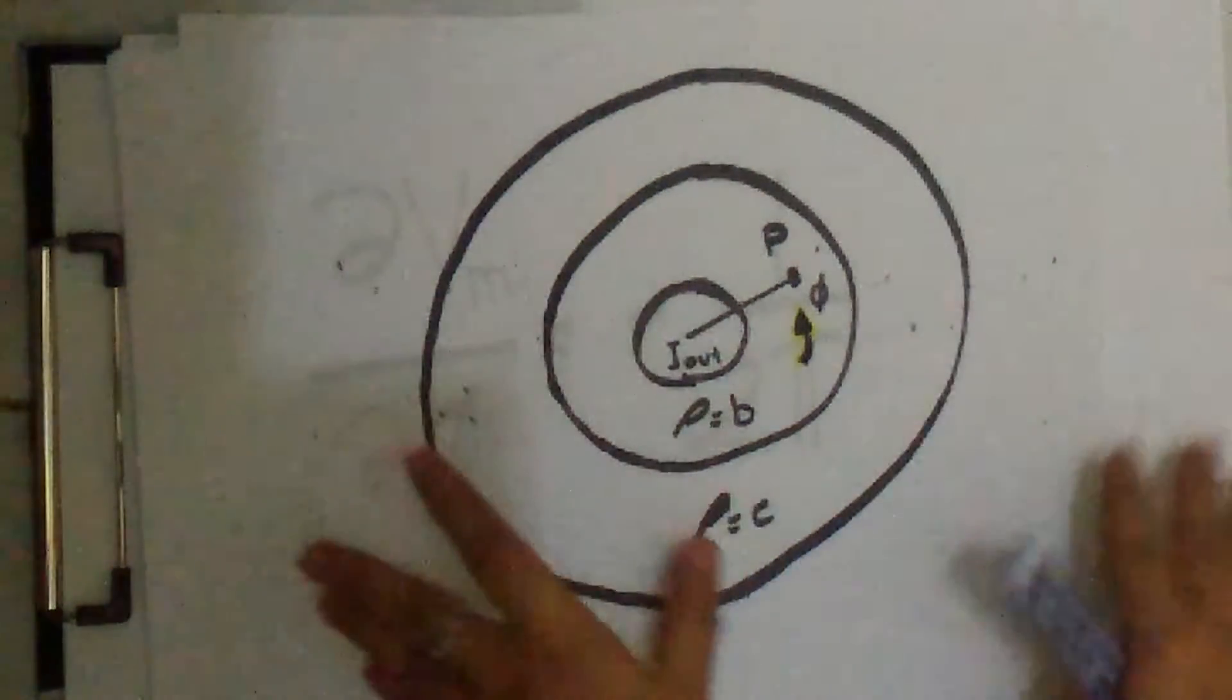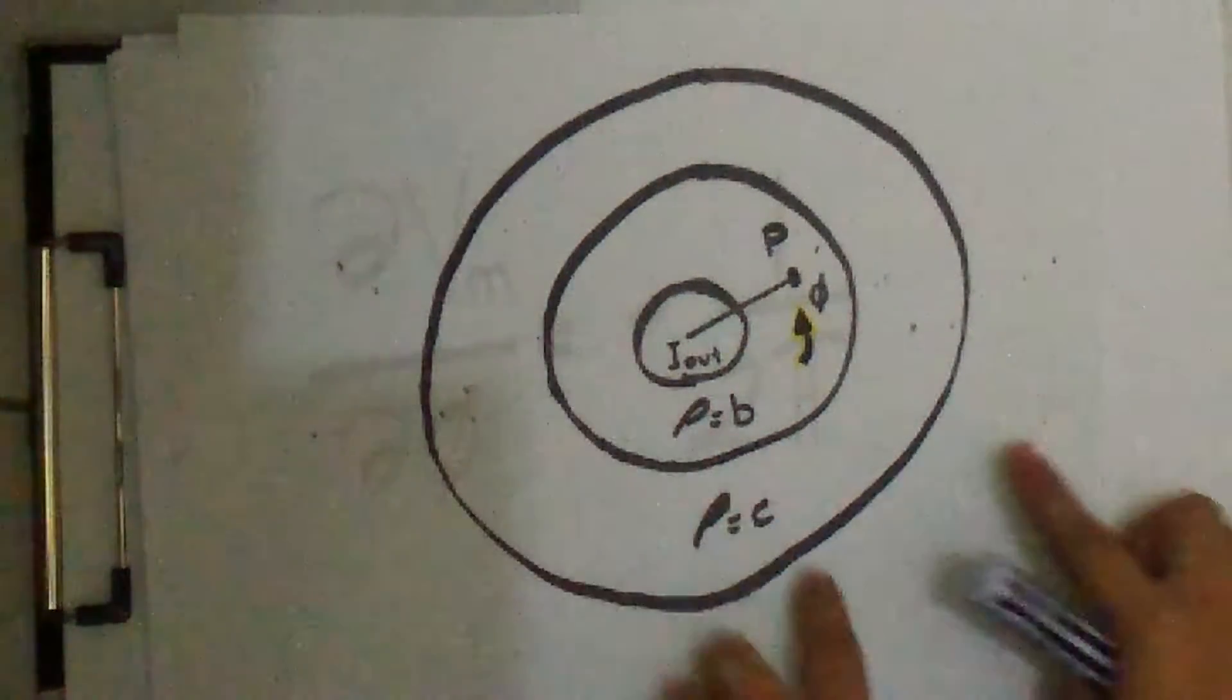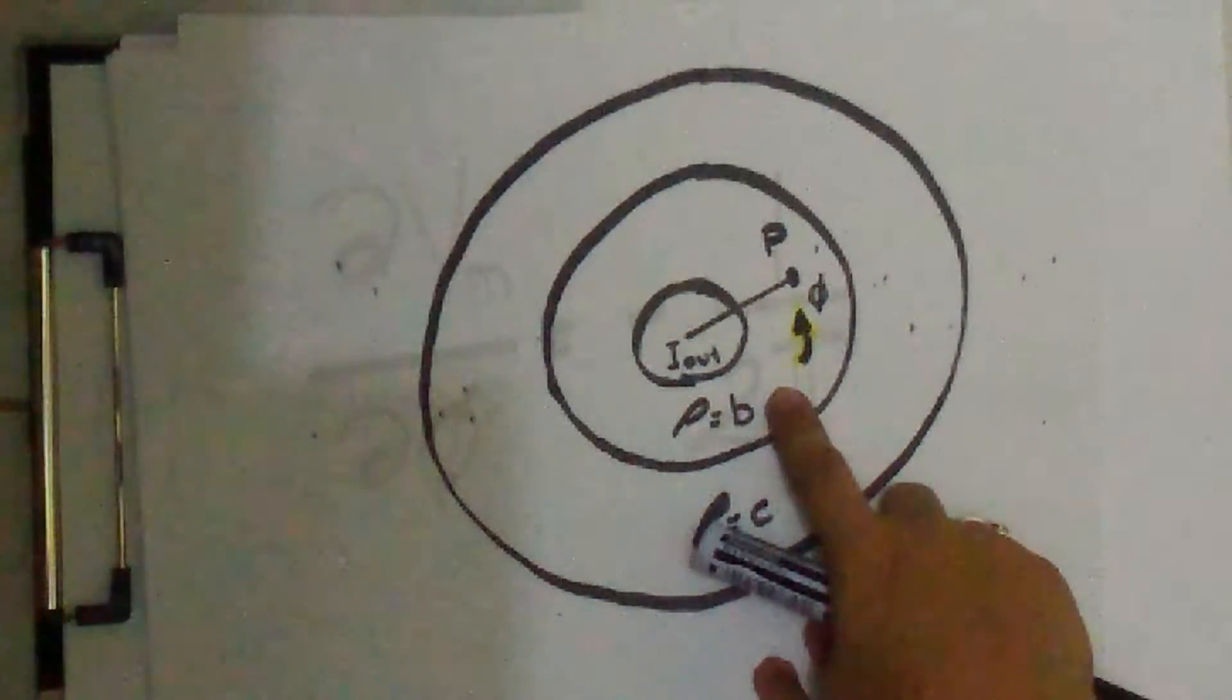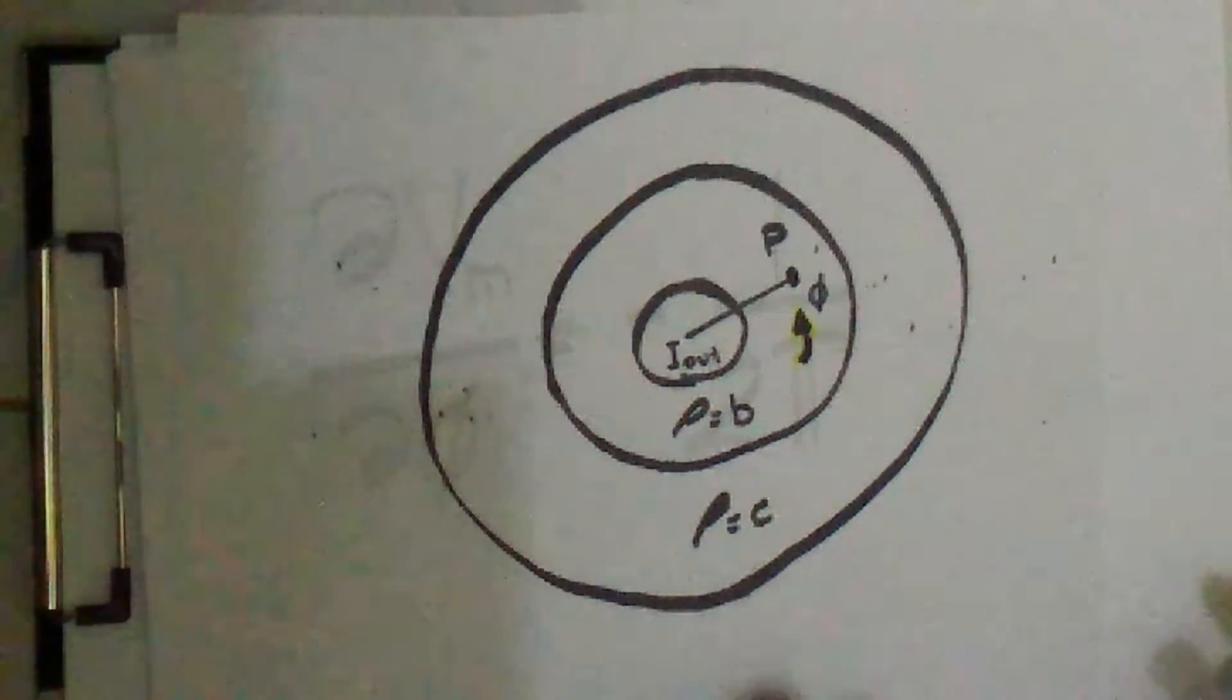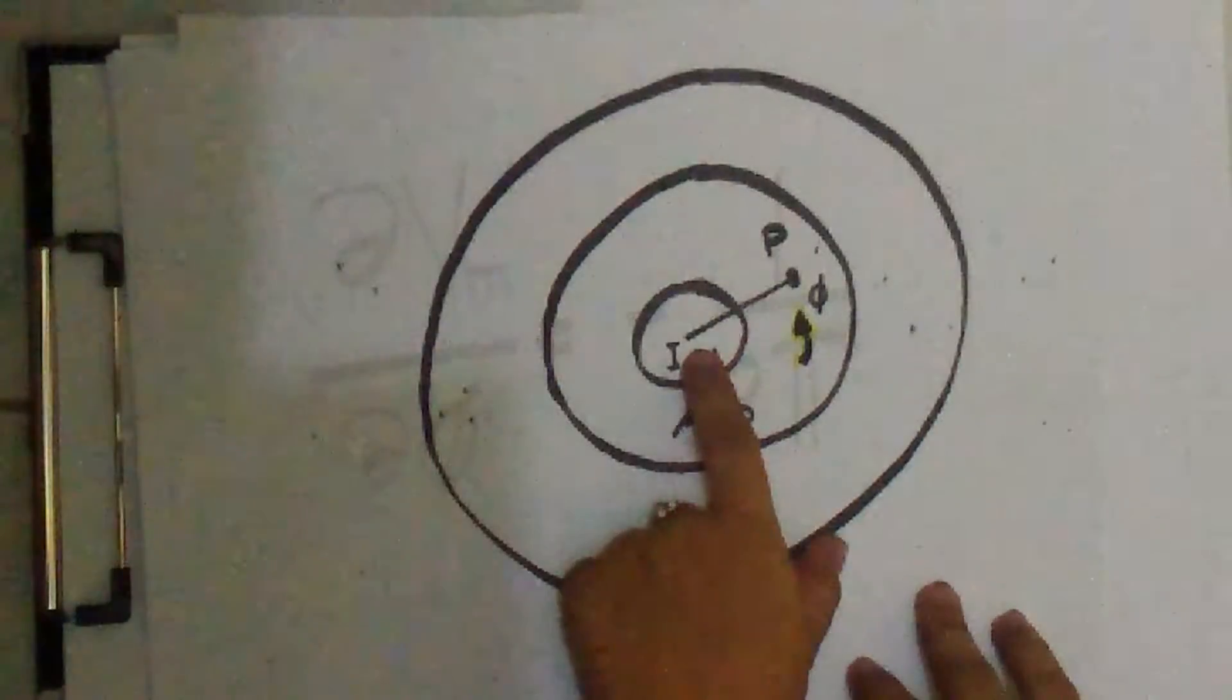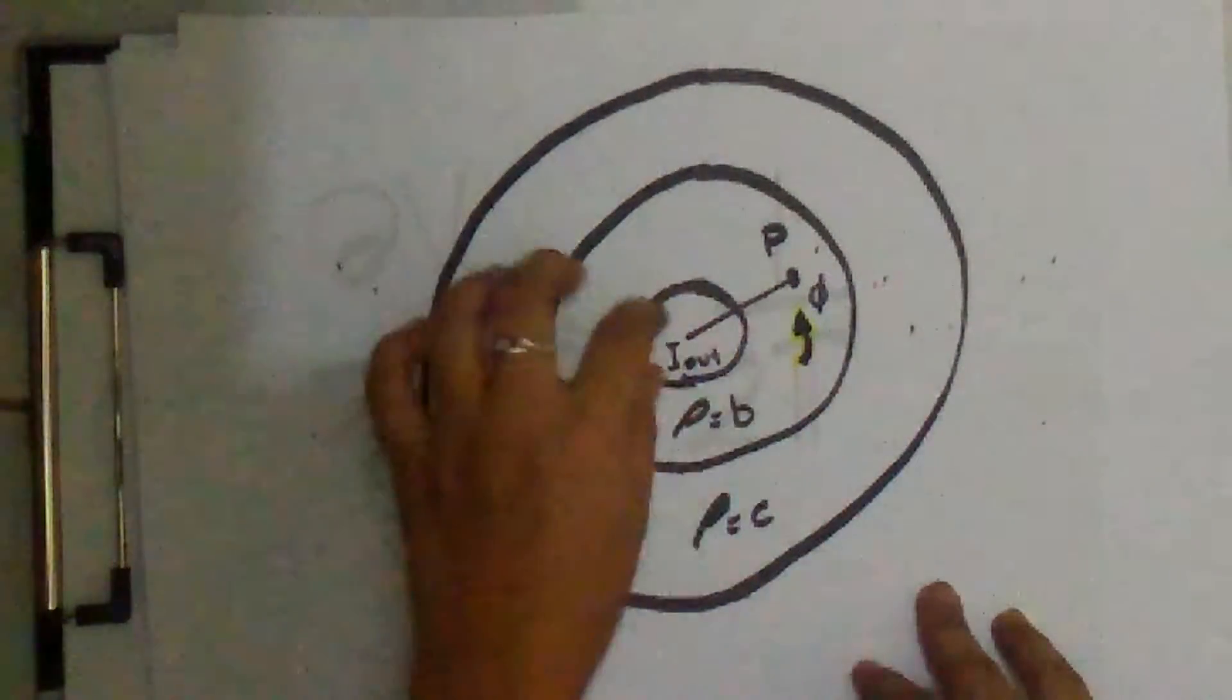This scalar magnetic potential Vm is a multivalued function of position. In the region of A and B, the electrostatic potential is always single valued. I is the total current flowing in the Ez direction in the inner conductor.